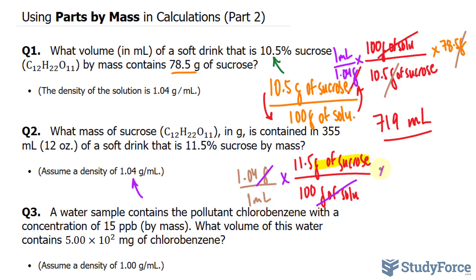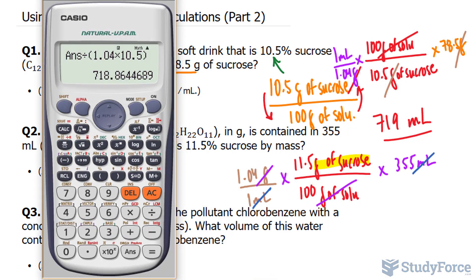By multiplying this now by a factor of 355 milliliters, this unit and this unit will cancel out leaving us with the desired number grams of sucrose. Let's go ahead and use our calculator. 1.04 times 11.5 times 355 divided by 100.